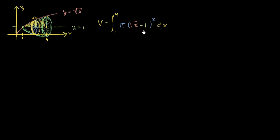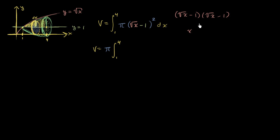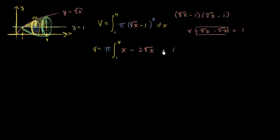And so now we just have to evaluate this definite integral. So this is going to be equal to the integral from 1 to 4. And we can put the pi outside the integral sign. And then we can expand this out. So we're going to expand the binomial: square root of x minus 1 times square root of x minus 1. Square root of x times square root of x is x. Square root of x times negative 1 is negative square root of x. Negative 1 times square root of x is another negative square root of x. And then negative 1 times negative 1 is positive 1. So this part simplifies to x minus 2 square roots of x plus 1, times dx.